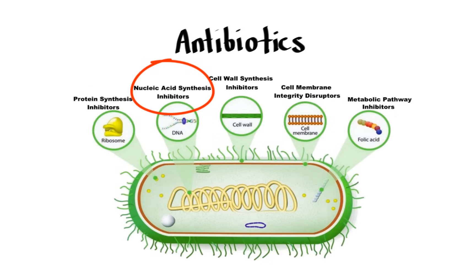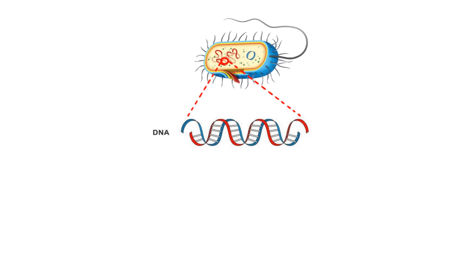Bacteria, just like all other living organisms, store their genetic information in the form of DNA. The cell uses DNA like an instruction manual, reading it to find out what parts it needs to make to survive and replicate. In order to carry out their life processes, bacteria must convert their genetic information into functional molecules.